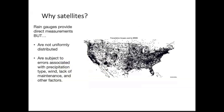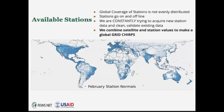Why do we use satellites? Ideally we might measure rainfall directly from rain gauges and other weather stations, but there are less rain gauges now than there were 20 years ago — there's a little bit of a reporting crisis. They tend not to be uniformly distributed, generally located around airports, and are subject to errors associated with precipitation, wind, and especially lack of maintenance. So a big part of our job goes to increasing our global coverage of stations — working with individual and regional agencies to bring in current and historical data, and constantly acquiring new station data and cleaning and validating existing data. Our coverage shows blue dots as stations, not uniform across the globe, which is why we need satellites to fill in the gaps.